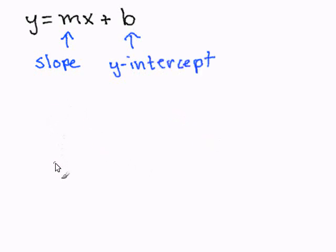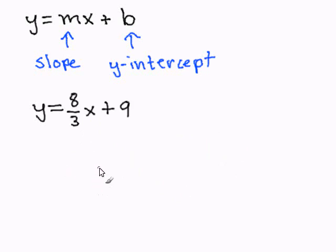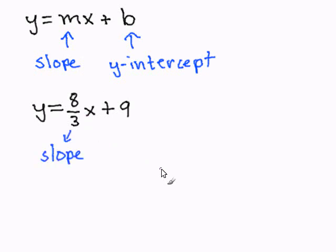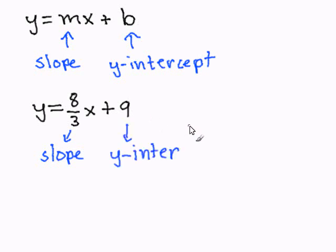Let's try an example. Here we have y equals 8 over 3x plus 9. As you see, 8 over 3 corresponds to m, which is our slope. Therefore, 8 over 3 is the slope. 9 corresponds to b, so therefore, 9 is the y-intercept. And this completes our problem.